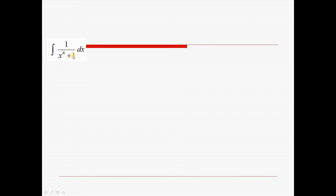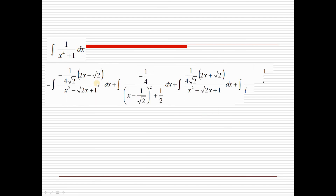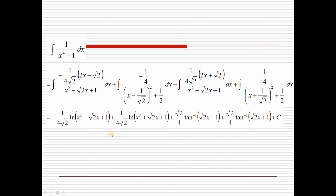Combining all parts, the integral of 1/(x⁴ + 1) dx equals: 1/(4√2) · ln|x² + √2·x + 1| minus 1/(4√2) · ln|x² − √2·x + 1|, plus arctan terms from the second and fourth fractions. This is the complete final answer.